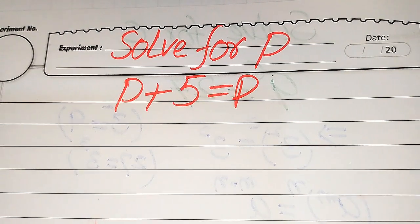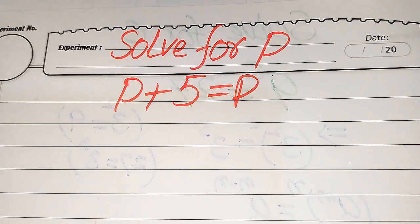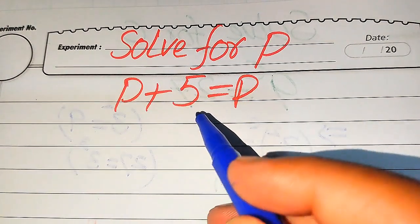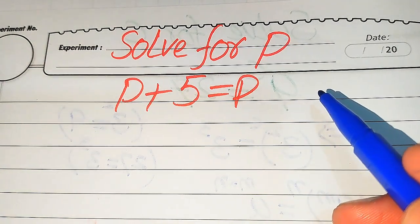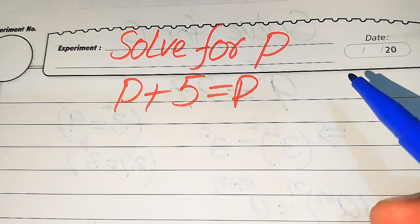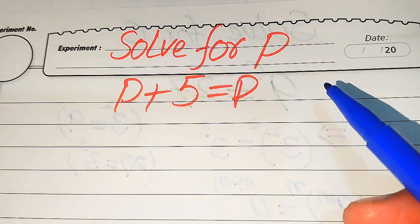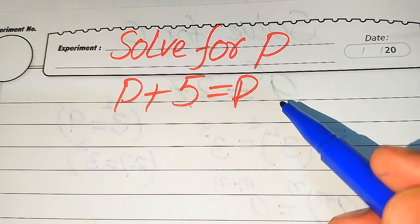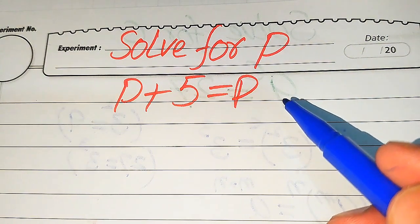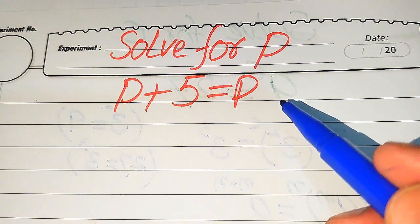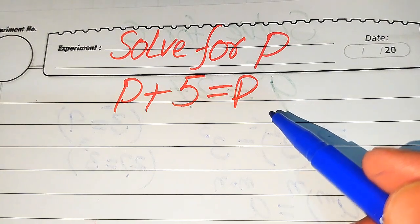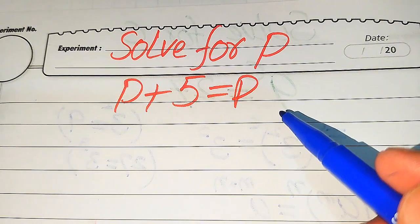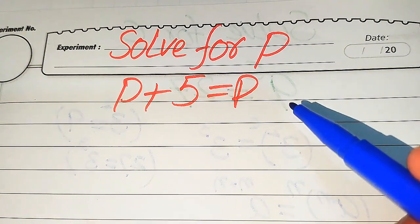Hello everyone. How to solve this problem for the values of p if we have √(p+5) is equal to p, and we solve this problem for the values of p. So here we first find the values of p — if the question statement in your exam is to find the values or find the roots of p, then how do you find the values of p?